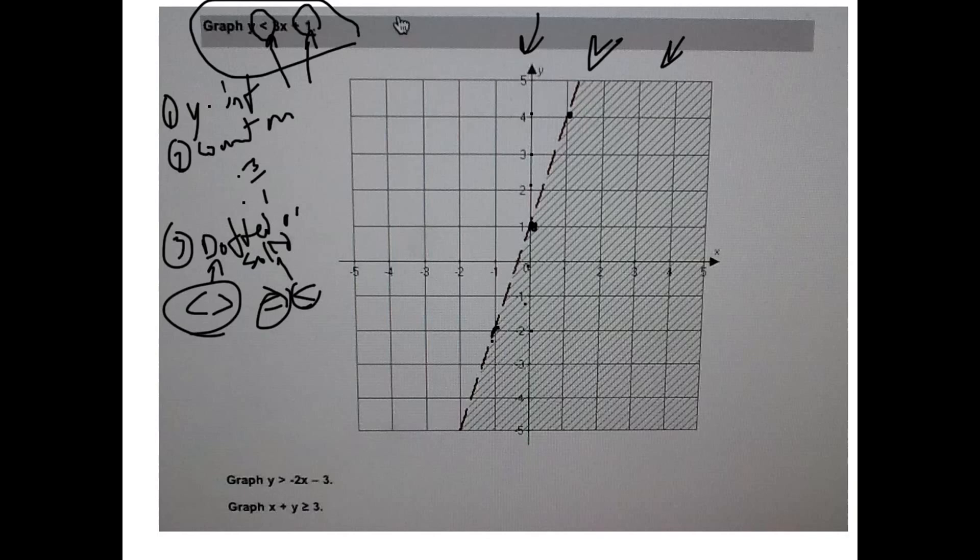Now there's a couple ways to figure out which side to shade. One way to do it is just pick a coordinate, pick any coordinate over here on this side or this side. If it works, shade the side with the coordinate. Easy way to do it: plug in zero zero.